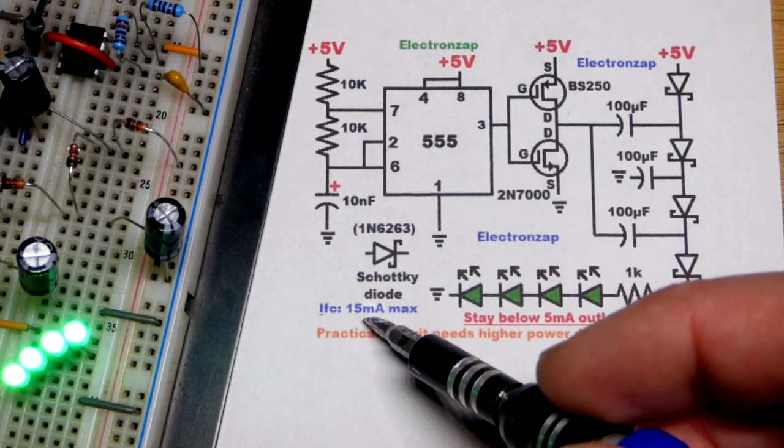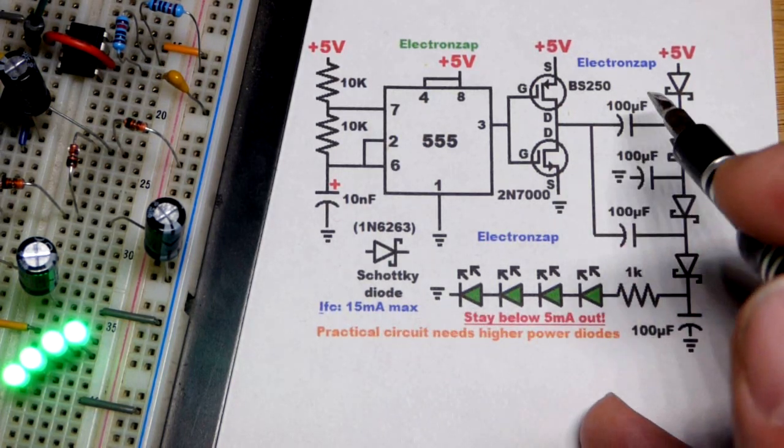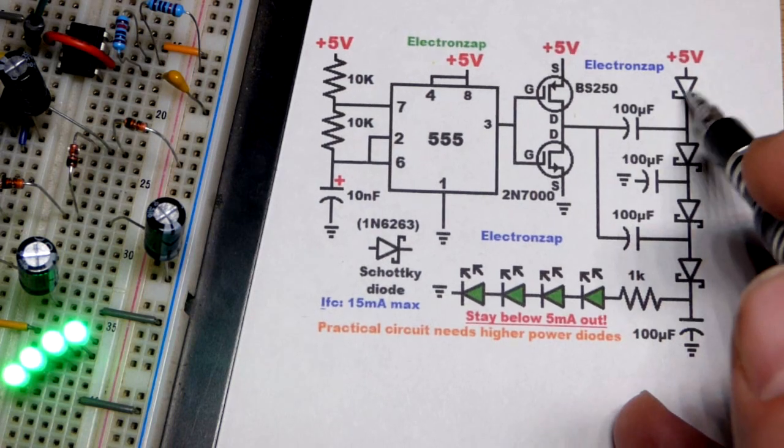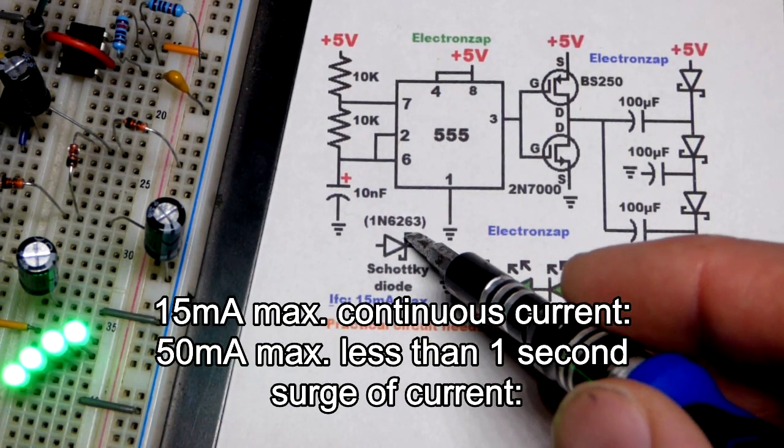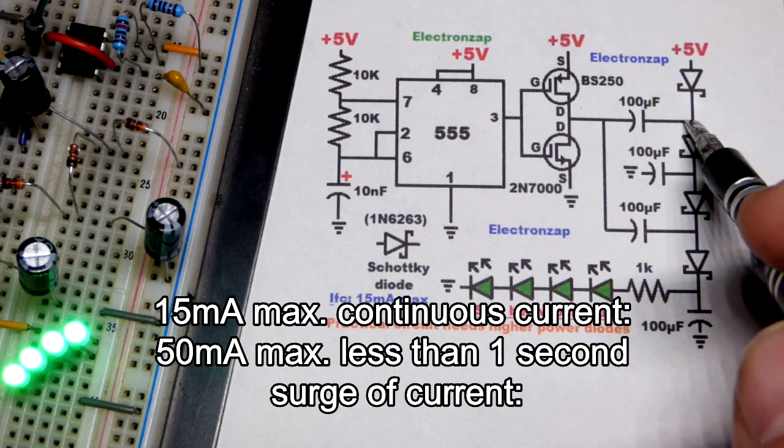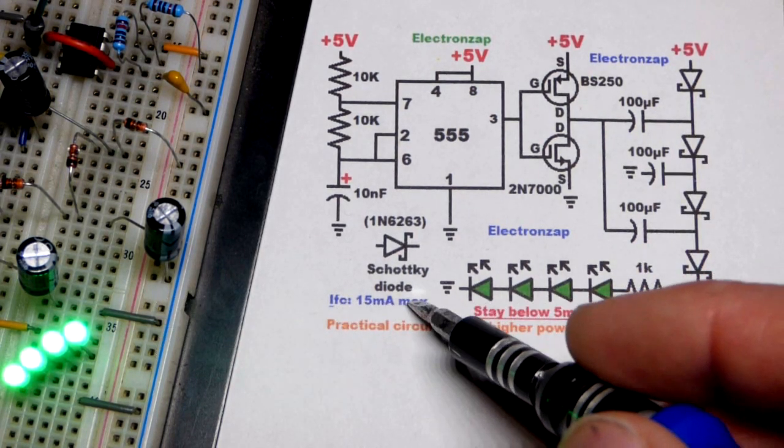I found out looking at the data sheet that these can only handle a continuous current - these 1N6263, I just have them from a kit, Joe Knows electronic semiconductor kit - they can only handle about 15 milliamps of current continuously.